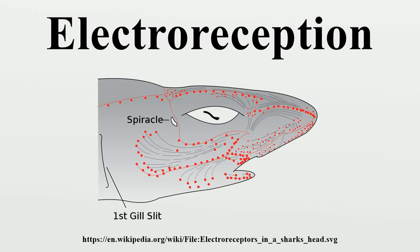Electroreception is the biological ability to perceive natural electrical stimuli. It has been observed almost exclusively in aquatic or amphibious animals, since salt water is a much better conductor than air. The currently known exceptions being echidnas, cockroaches, and bees.